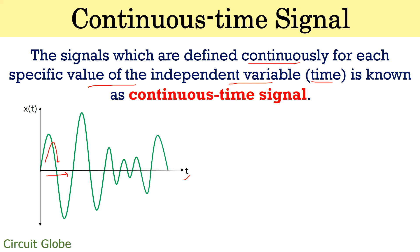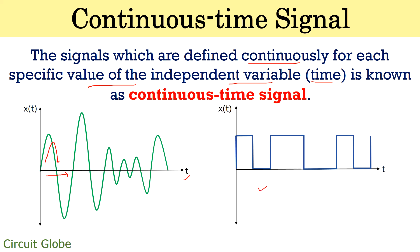It is not necessary that if a signal is not continuous at all points then it is not a continuous time signal. Consider a rectangular waveform shown here — this is also a continuous time signal. The rectangular waveform shows discontinuities at several points, but the value of the wave is still defined at all points, even at points where discontinuities occur. Thus, a continuous time signal is defined relative to its being defined at all points, irrespective of the discontinuities. Although the value at those points is 0, it is still defined for a specific time t, and in this way it is called a continuous time signal.